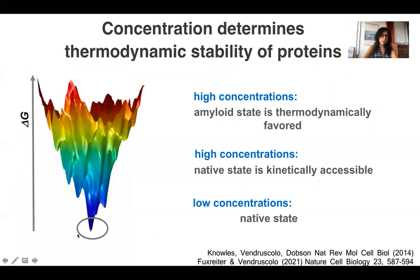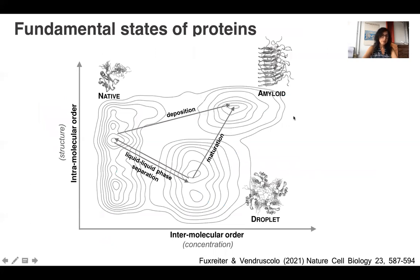The native state of proteins is thermodynamically favoured at low concentrations. However, at high concentrations, it is the amyloid state which is the most stable one. The native state is still possible because of its kinetic accessibility, but it's not the most stable one anymore. So under physiological conditions, proteins can sample three fundamental states: the native state, the droplet state — which is liquid-like — and the amyloid state — which is solid-like. In order to describe this landscape, we need to consider both the intramolecular organization of proteins as well as their intermolecular organization.